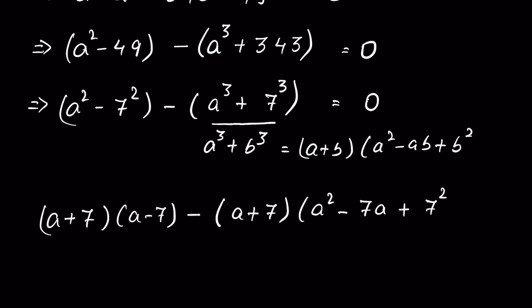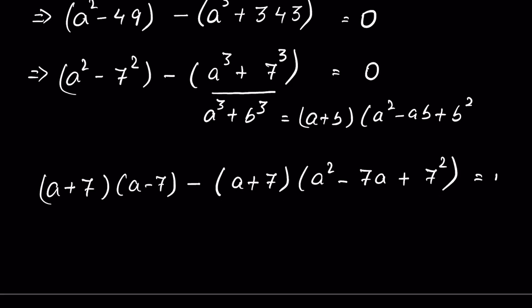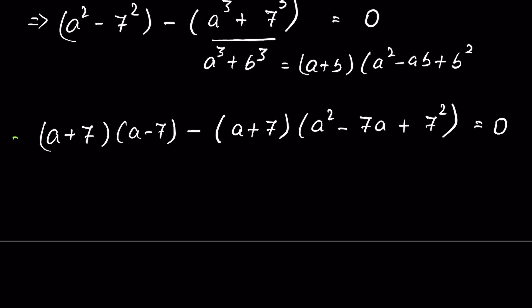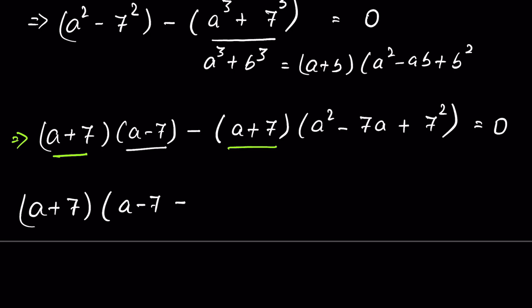We notice that (a + 7) is a common factor in both terms. Factoring it out, we get (a + 7) times the quantity (a − 7) minus (a² − 7a + 49) equals 0.